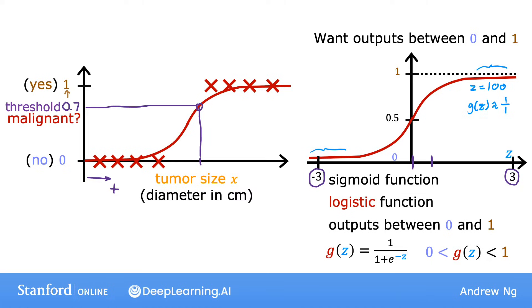And conversely, you can also check for yourself that when z is a very large negative number, then g of z becomes 1 over a giant number, which is why g of z is very close to 0. So that's why the sigmoid function has this shape where it starts very close to 0 and slowly builds up or grows to the value of 1.